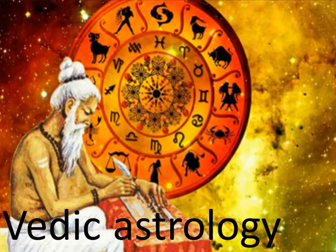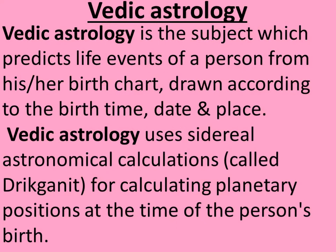We are going to study about Vedic Astrology. Vedic Astrology is a subject that predicts life events of a person from his or her birth chart, drawn according to the birth time, date, and place, with the use of a mathematical calculation in Sanskrit known as Ganita.